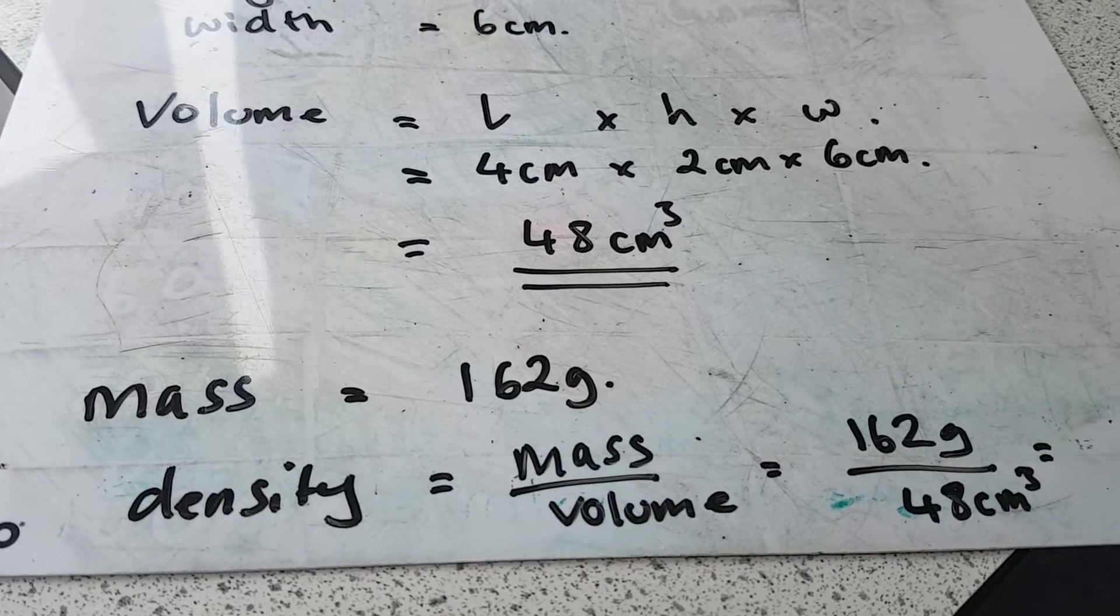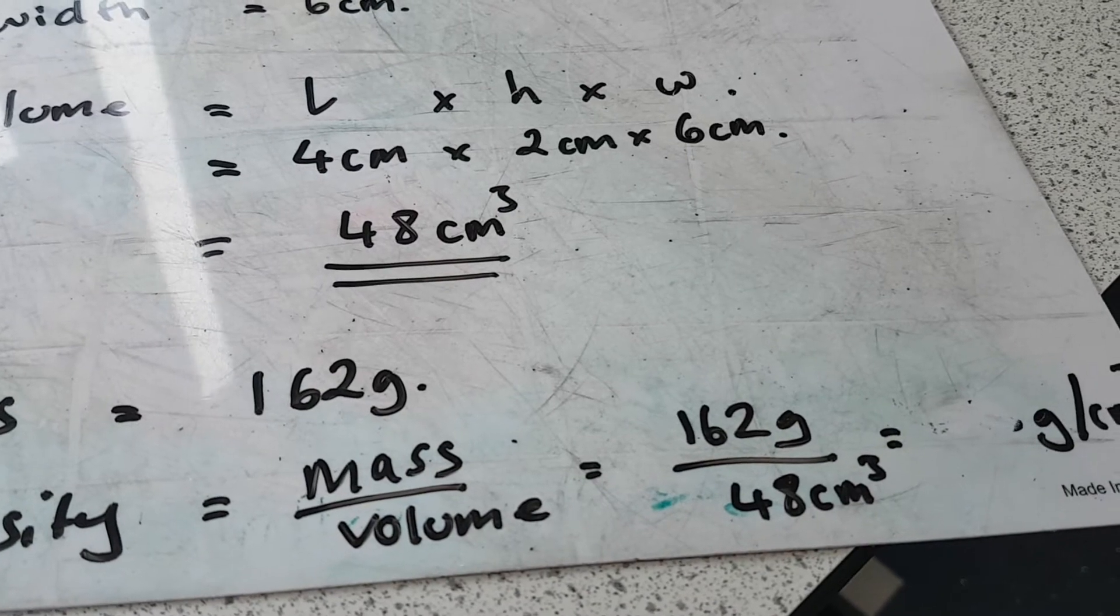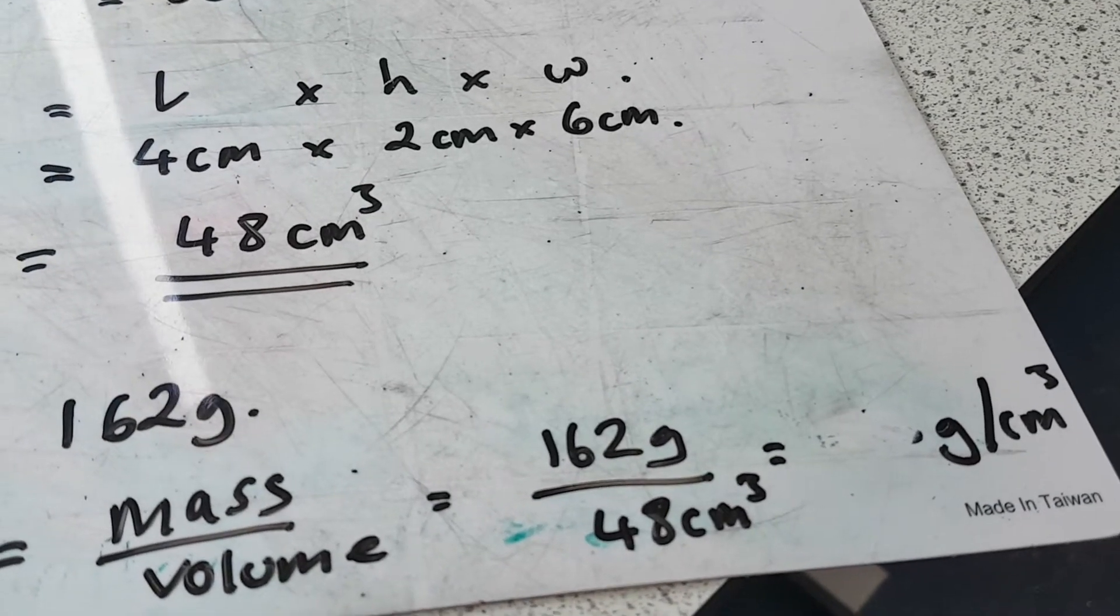So to work out my density, it's mass divided by volume, which is 162 grams divided by 48 centimeters cubed, which is going to give me whatever the answer is.